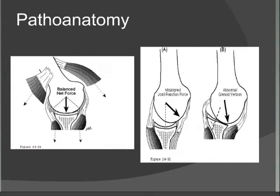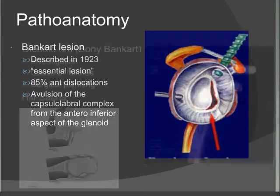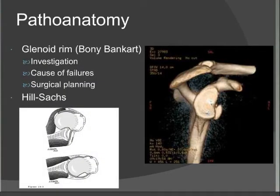The main lesion we see in anterior traumatic dislocations is the Bankart lesion, described by Bankart in 1923 as the essential lesion in anterior dislocations. Arthroscopic studies and MRIs have shown that around 85% of anterior dislocations will have a Bankart lesion — essentially an avulsion of the capsulolabrал complex from the anterior aspect of the glenoid. The other important findings are glenoid rim fractures or bony Bankarts, which are very important to look for as they can cause failures of arthroscopic stabilisation.